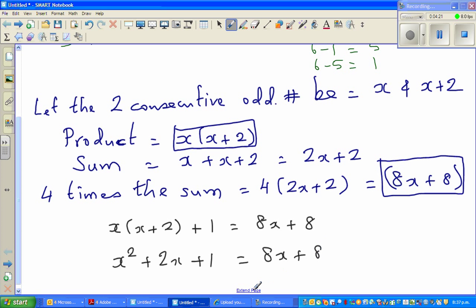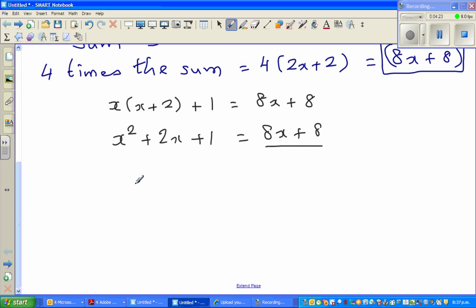So x squared plus 2x plus 1, minus 8x minus 8, is equal to 0. This is x squared plus 2x minus 8x is minus 6x, and plus 1 minus 8 is minus 7.